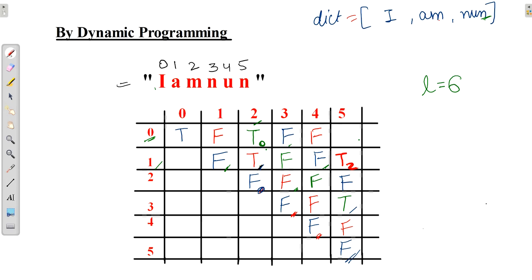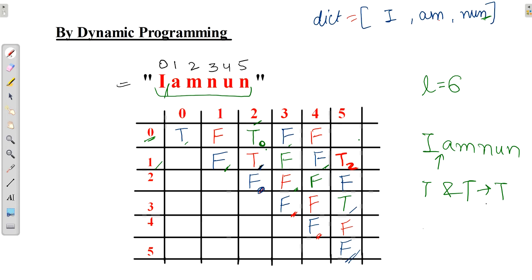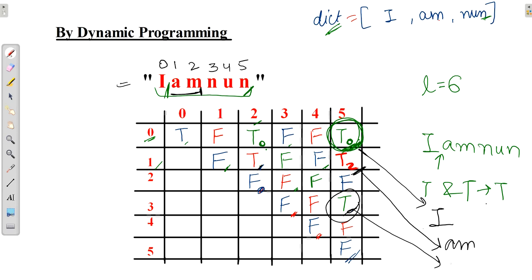Now the 6-letter word 'IAMNUN' (0,5) — not directly in dictionary. Split at I: I (0,0) is true and AMNUN (1,5) is true — true and true gives true! Mark true, split at index 0. This true means the string can be split into multiple words all present in the dictionary. Tracing back: split at index 0 gives 'I', then split at index 2 gives 'AM', then 'NUN'.